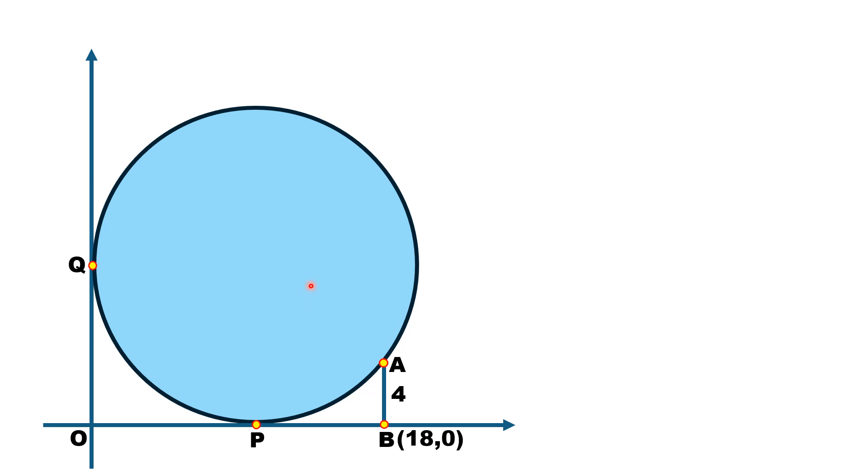First of all, let us mark the center of the circle and draw two radii from the center to both points of tangency. Since these line segments are radii, let us call the radius of the circle as lowercase r.